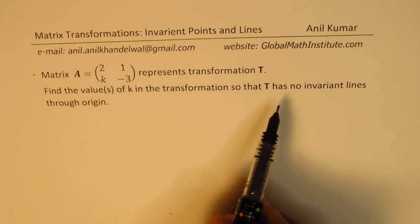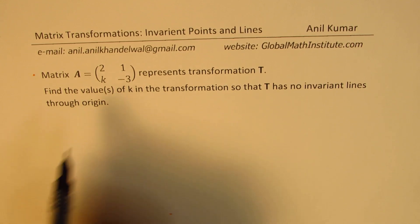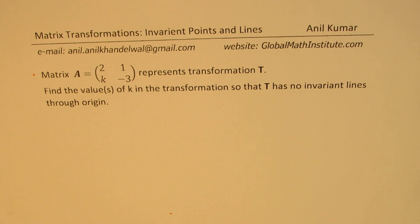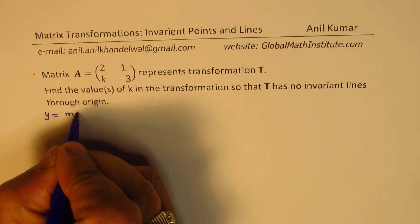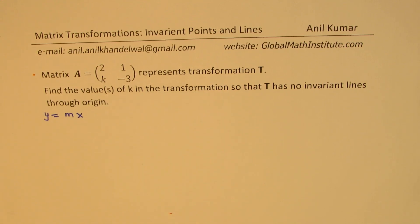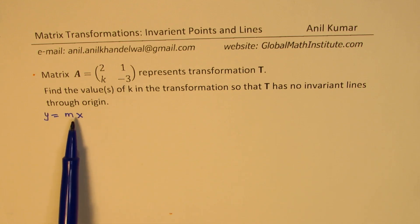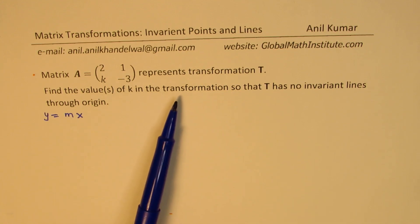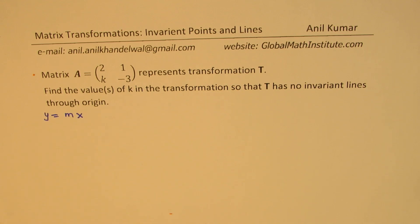So when we are saying find equation through origin, that means we're looking for equation of a line of the form y equals mx. Now we are having this transformation on such a line which goes through the origin, and after the transformation we want them to have the same slope.